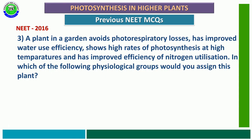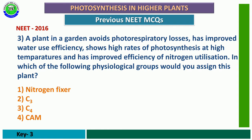Question number 3 from NEET 2016: A plant in a garden avoids photorespiratory loss, has improved water use efficiency, shows a high rate of photosynthesis at high temperature, and has improved efficiency of nitrogen utilization. Which physiological group would you assign these plants to? The correct answer is C4 plants — third option — because photorespiratory loss is not seen in C4 plants, they can perform photosynthesis at high temperature, and they utilize water efficiently.